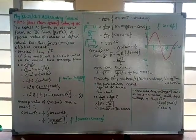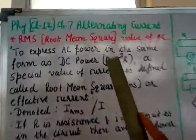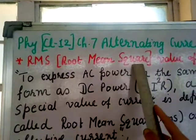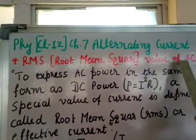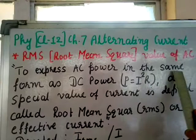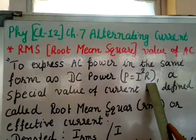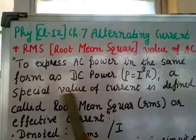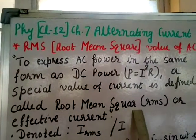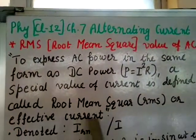Physics class 12, chapter 7, alternating current. RMS — root mean square value of AC. To express AC power in the same form as DC power, P = I²R, a special value of current is defined called root mean square, RMS, or effective current.